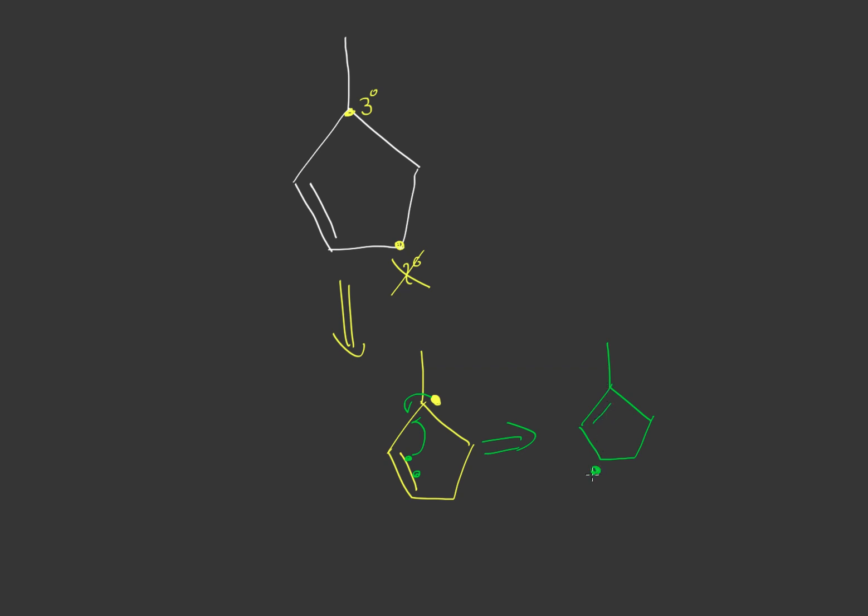And then our radical is actually right here. So how many different spots could we form bromine? We can form bromine right here and it can form bromine right here.